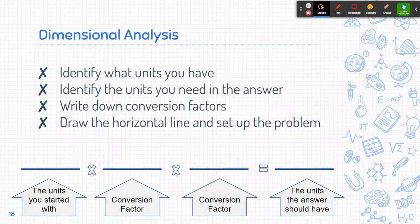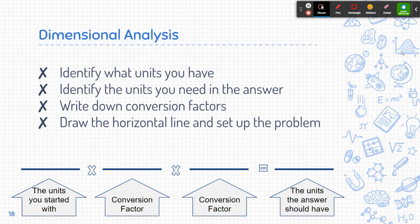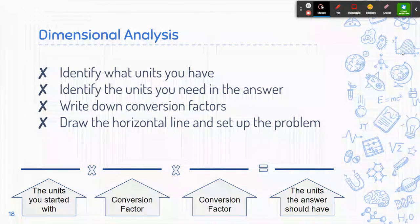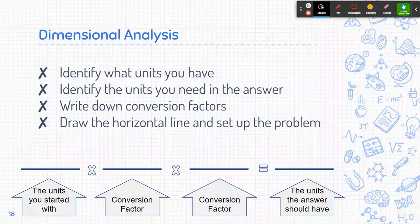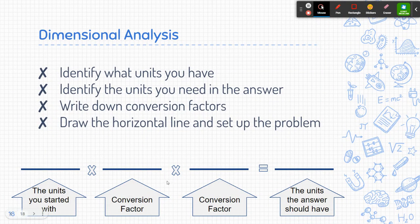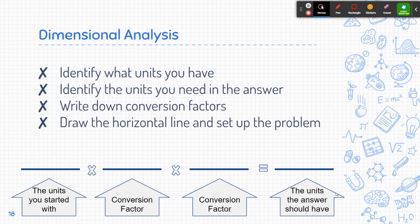When you're doing dimensional analysis you need to do four different things. You need to identify what units you have, what the units are that you need in the answer, you need to write down conversion factors, and you need to draw a horizontal line and set up the problem. On the left side here we have the units that we started with, a couple conversion factors, and then the unit that the answer should have.